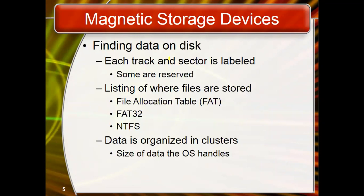Sectors are generated through the filing system. There are different types of file allocation systems such as FAT and NTFS. Disk formatting is the process to configure a data storage device such as a hard drive, floppy disk, or flash drive when using it for the very first time, so that sectors and tracks are created properly.